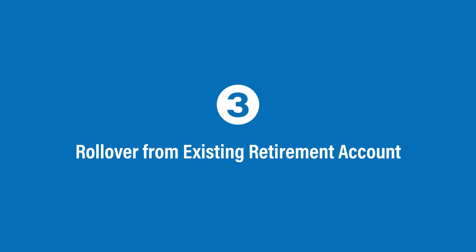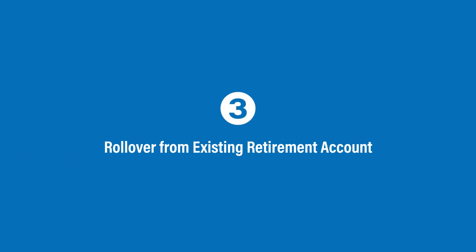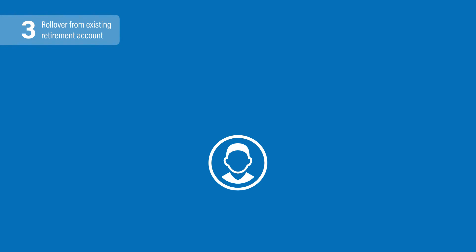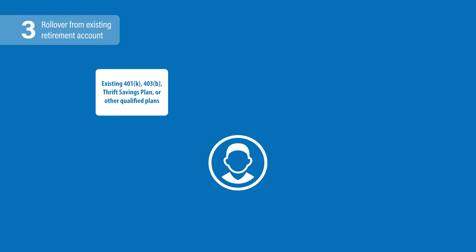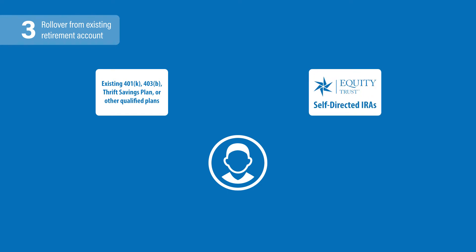The third option of funding an IRA is with a rollover. A rollover involves moving funds from a qualified plan such as a 401(k), 403(b), thrift savings plan, or other qualified plan to an IRA. A rollover typically occurs when the account owner receives a personal distribution from their previous employer or current provider of their plan and then deposits it into the new account.